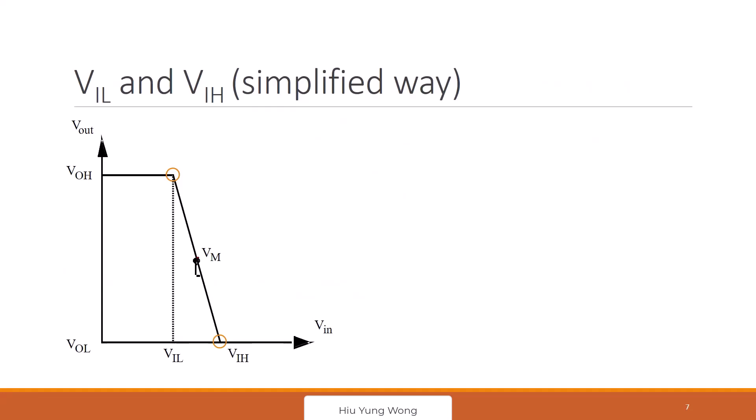We say that we have Vm. Vm is just when Vin equals Vout, right? If you look at this graph, if you're not really trying to understand, I think everyone will just think that Vm is Vdd over 2. That is normal if you think in that way. But unfortunately, that is not right.